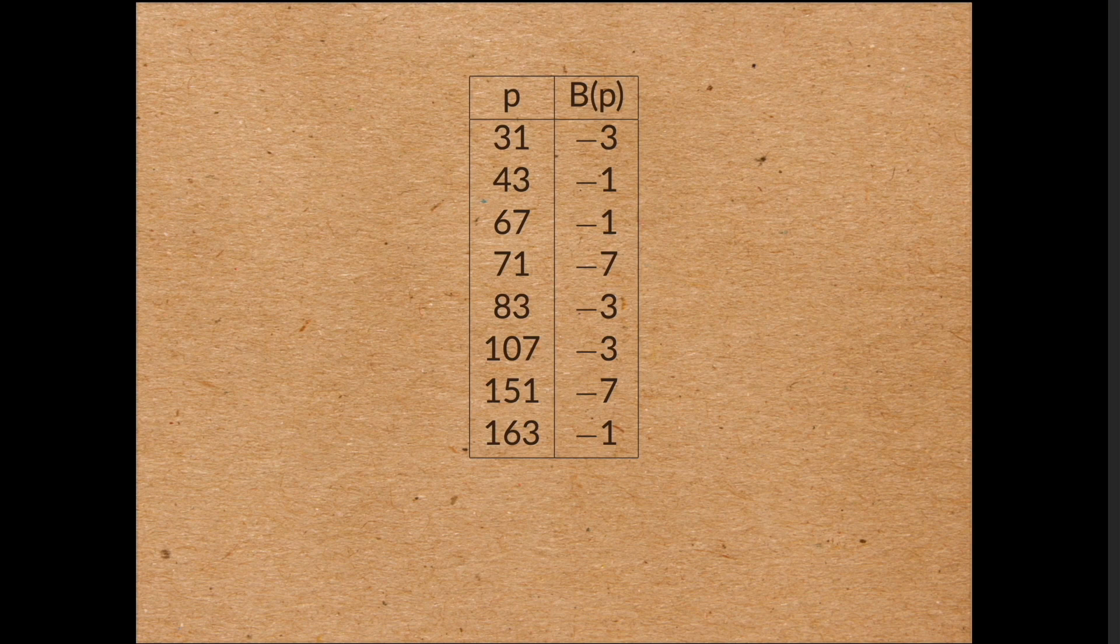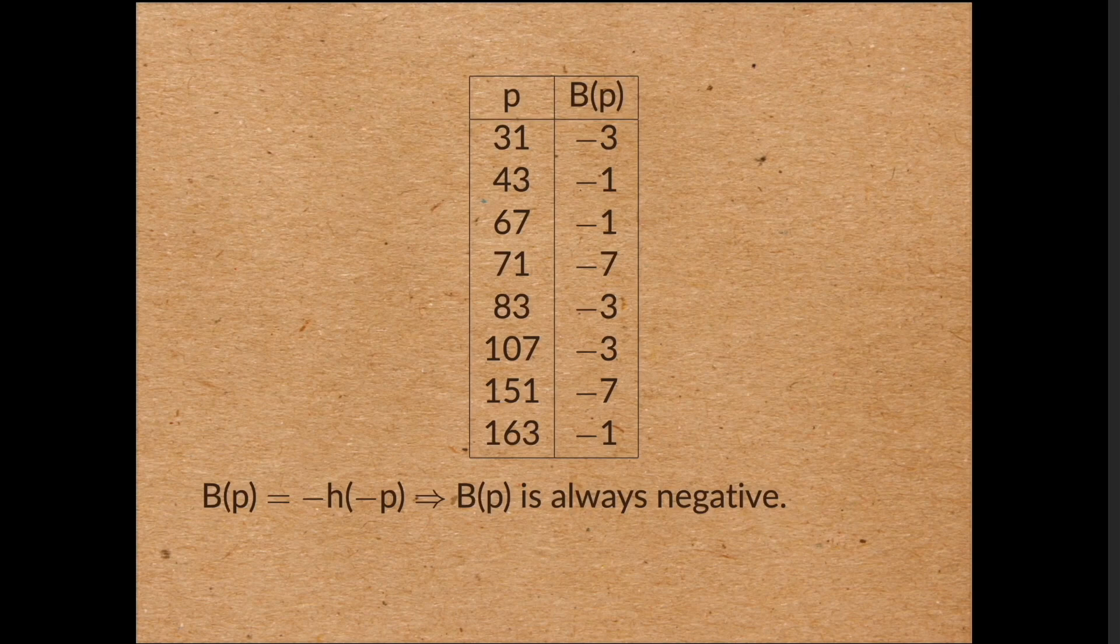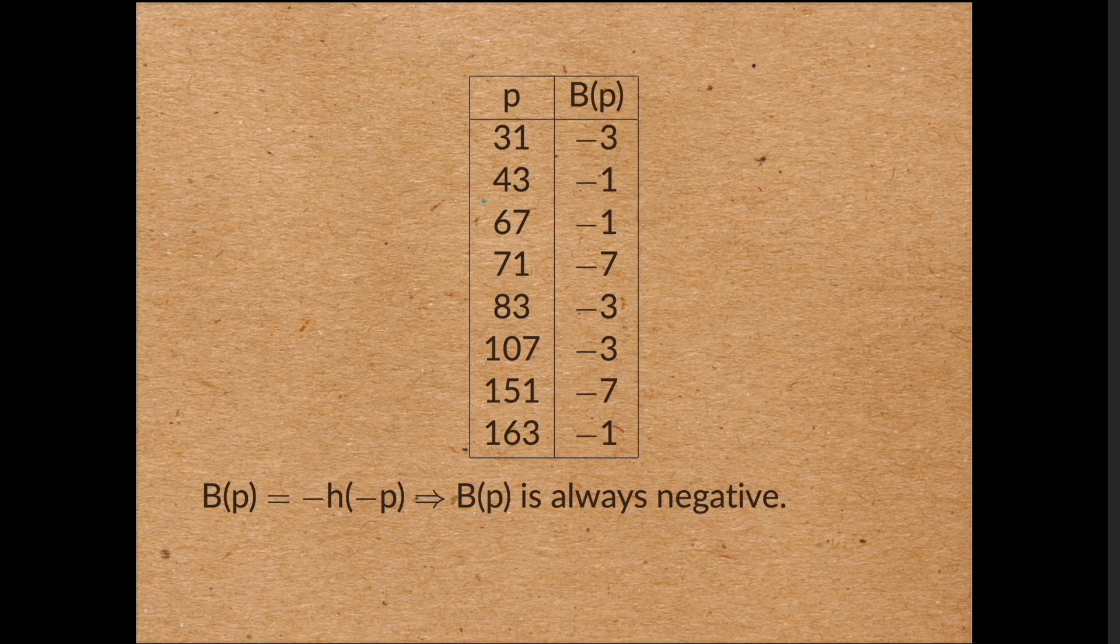Now 163 is a famous number in mathematics. It's the last of Gauss's list of imaginary quadratic fields with class number 1. What are the other numbers on that list? Well, the next two largest are 43 and 67. And in fact, this function b(p), for the primes occurring in this list, is always equal to minus the class number of the quadratic field of discriminant minus p. So in fact, b(p) is always negative on this list.